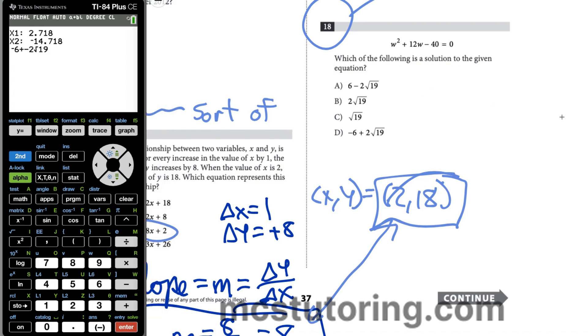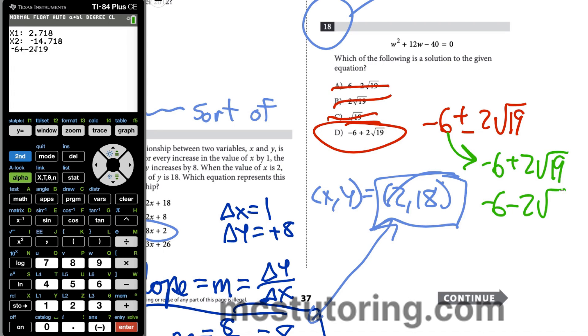My answer that I get from the calculator is negative 6 plus or minus 2 radical 19. So it's a negative 6. This is one of those solutions because to get a little pedantic, it would be negative 6 plus 2 radical 19 is one solution, and negative 6 minus 2 radical 19 is the other solution. That's what this nomenclature means. We're going to choose option D.